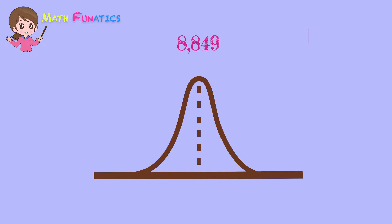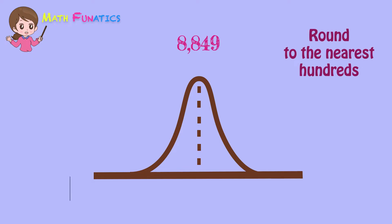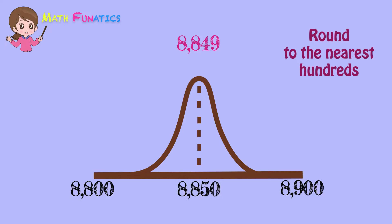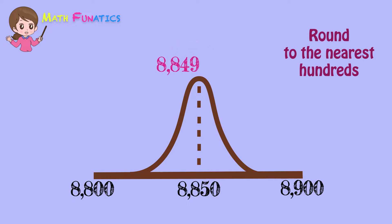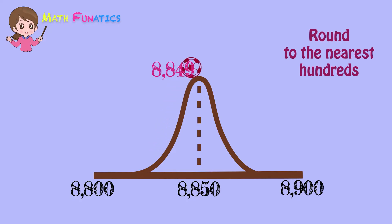How about if we round 8,849 to the nearest hundreds? 8,800 will be placed on the left end and 8,900 on the right end. On the peak of the hill is the middle number, which is 8,850. This time, 8,849 is found right before 8,850. The ball rolls only up to 8,849 and will never reach the peak. With that, it will roll back and shall end at 8,800.